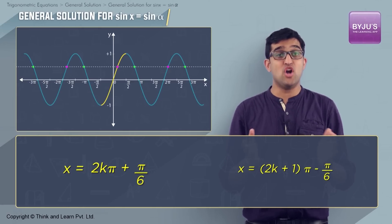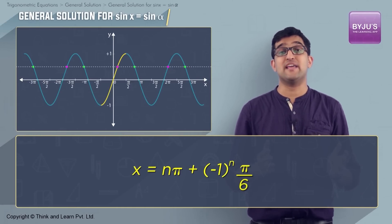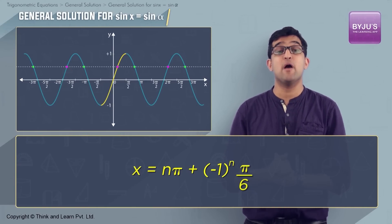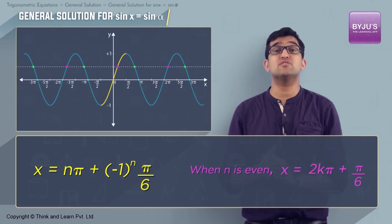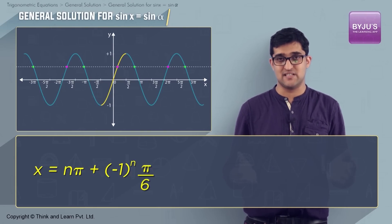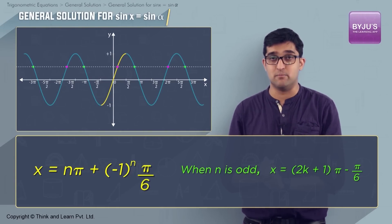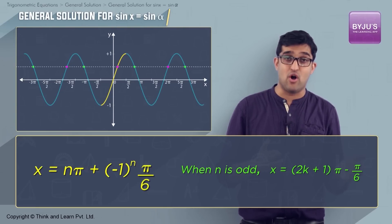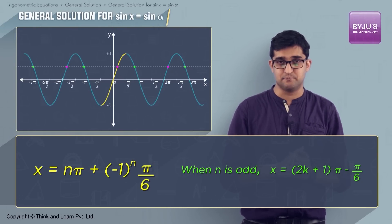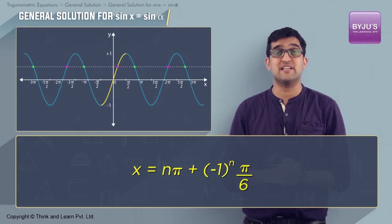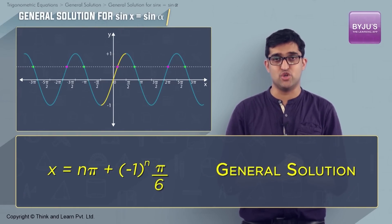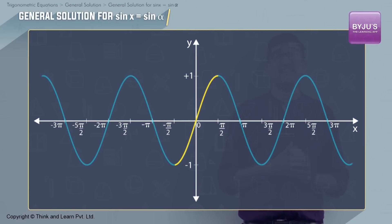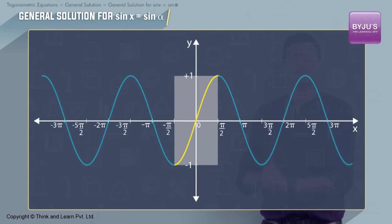These two sets can also be written together as nπ + (-1)^n · π/6. When n is an even number, this represents all solutions of the form 2kπ + π/6, and when n is an odd number, this represents solutions of the form (2k+1)π - π/6. This type of solution, where all solutions are represented using an integer variable n, is called the general solution. Similarly, we can find general solutions for any value of sin x in the closed interval [-1, +1].